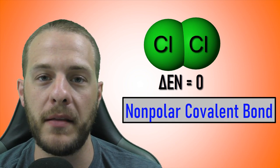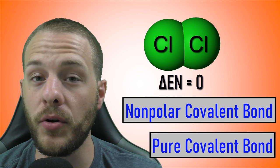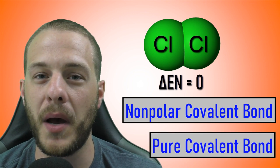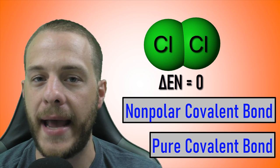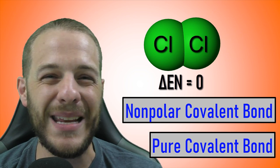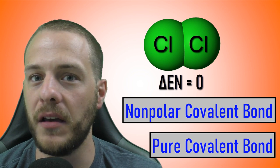Consider the bond between two chlorine atoms in a diatomic chlorine molecule. Since these two atoms are identical, their electronegativities are identical, and so the difference in electronegativity, which is symbolized by delta En, is zero in this case. This results in what we call a nonpolar covalent bond, also called a pure covalent bond, which is characterized by a completely equal sharing of electrons between the two bonded atoms. Neither one of those chlorine atoms has any more electron density than the other.